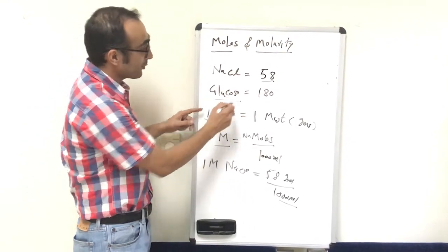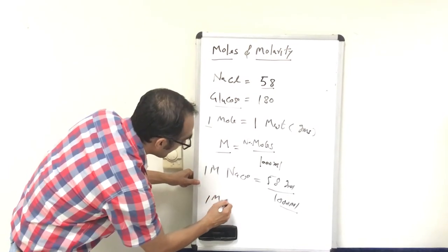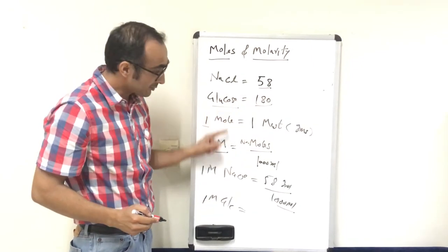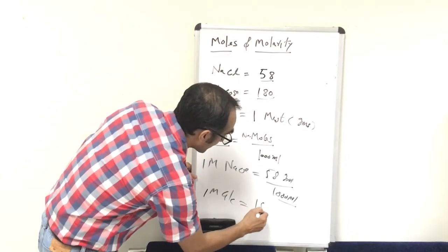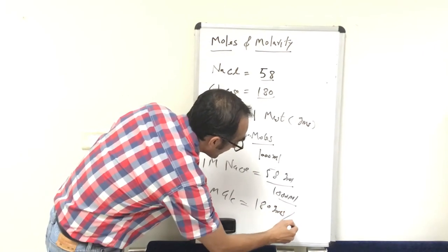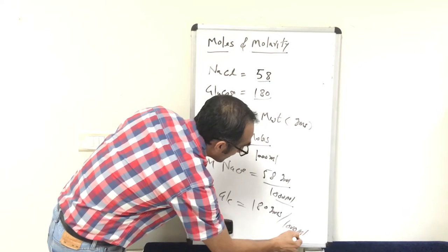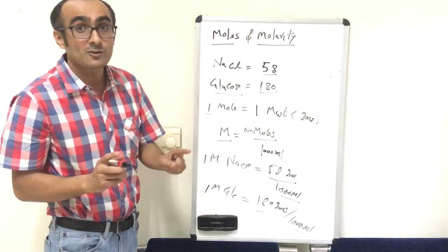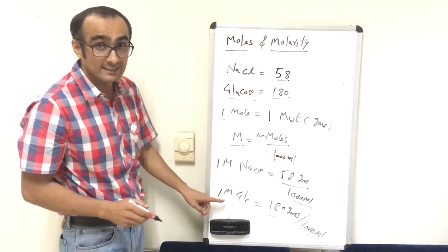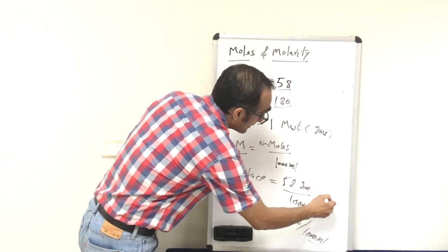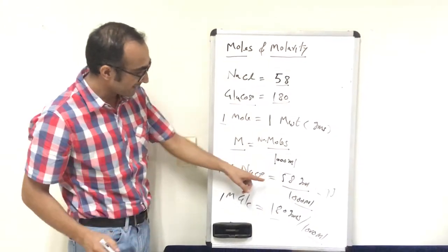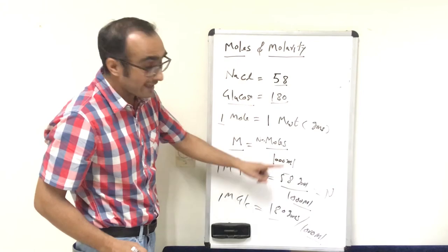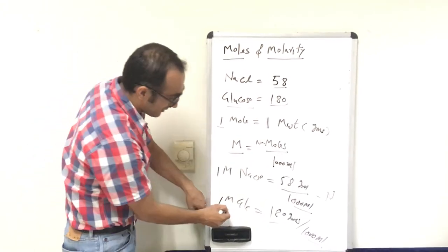Similarly, to prepare a one molar glucose solution, you take 180 grams of glucose and dissolve it in one liter or 1000 ml. 180 grams is the molecular weight of glucose. This is called a one molar solution of glucose. If you calculate the number of molecules, it will remain the same in both cases — equal to one Avogadro's number, 6.02 × 10²³ molecules per liter.